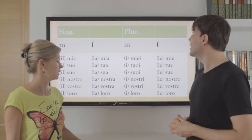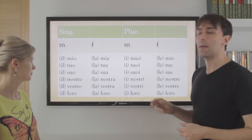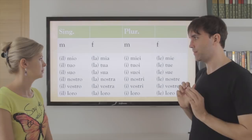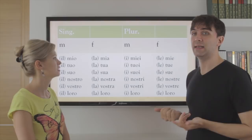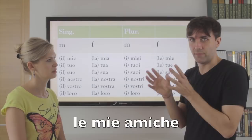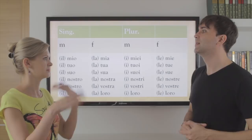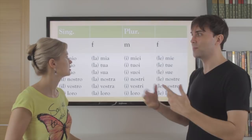Now let's take a look at the plural. Masculine: i miei, le mie. I miei amici, le mie amiche — my friends, my girlfriends. Amici is friends for male friends and amiche for female friends. If they're all together mixed, it's amici in general.